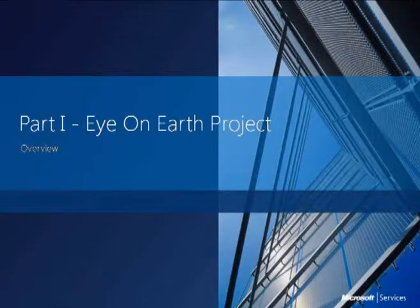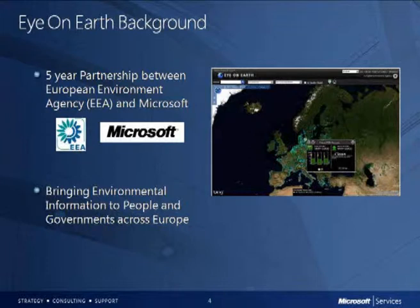What is Eye on Earth? It's a five-year partnership between the European Environment Agency and Microsoft, with the goal to bring environmental information to citizens and governments across Europe, and also to act as a two-way communication platform, where citizens have the capability to report back on their own environment. To make yourself familiar with what the agency is doing and the history of Eye on Earth, I will first show you a short video.